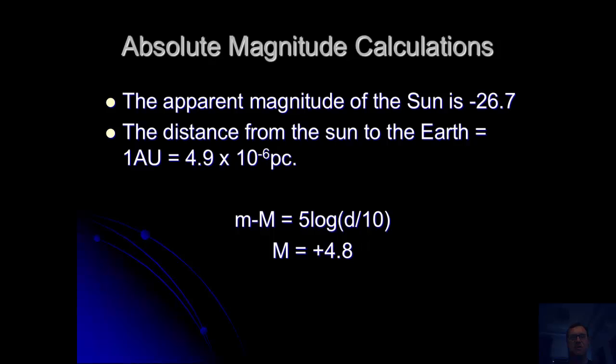Therefore the absolute magnitude of our sun is plus 4.8. That's how bright it would appear if it was exactly 10 parsecs away from us. Plus 4.8, that's pretty much the only calculation you can do with this. And that is the end of this session.